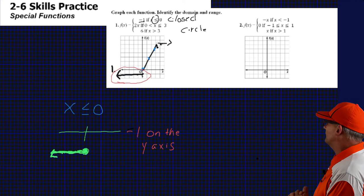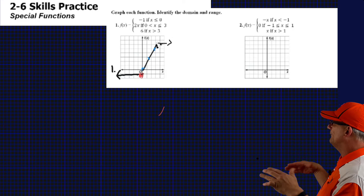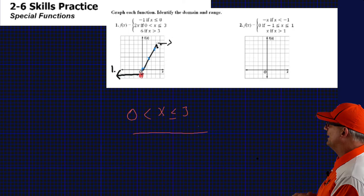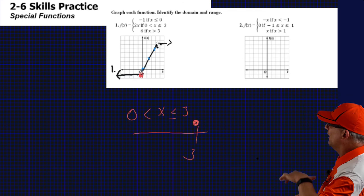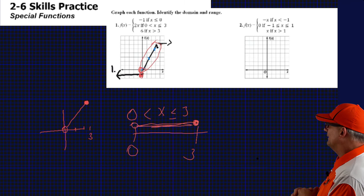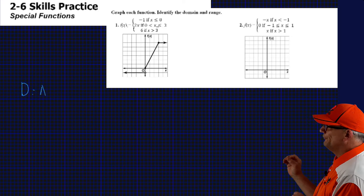Let's take a look one more time — I'm taking my time on this first one. On the first graph it was x less than or equal to 0: closed circle, line to the left, just like on a number line. The next is x greater than 0 and less than or equal to 3: closed circle at 3, open circle at 0. The last is x greater than 3: open circle at 3 extending to positive infinity. It's the exact same logic — we're just doing it on the graph.